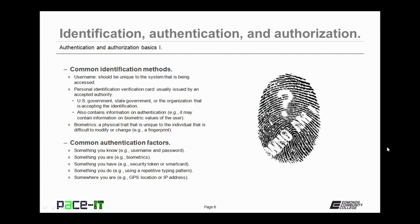There are some common identification methods. The first one is the username. Usernames should be unique to the system that is being accessed. There are also personal identification verification cards, which are usually issued by an accepted authority, such as the U.S. government, state government, or the organization accepting the identification. A personal identification verification card may also contain biometric values of the user. Another common form of identification is biometrics — a physical trait unique to the individual that is difficult to modify or change, such as a fingerprint.